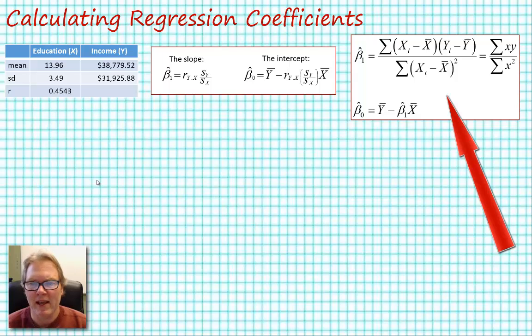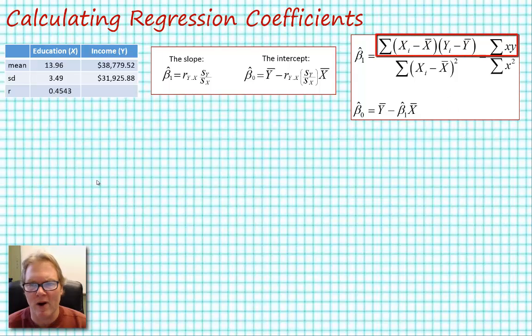Another way of saying that formula for beta hat sub 1 is in the numerator we have the covariance of x and y, and in the denominator we have the variance of x. So anytime somebody talks about the ratio of the covariance of x and y to the variance of x, you're calculating your beta hat sub 1.